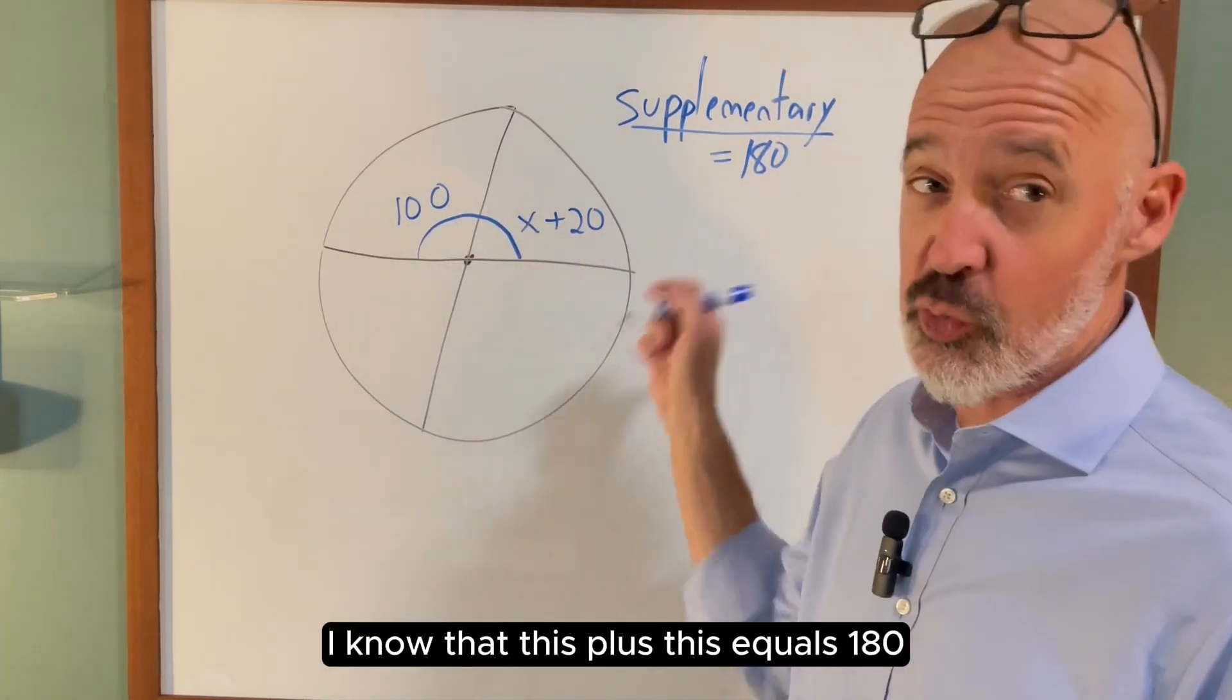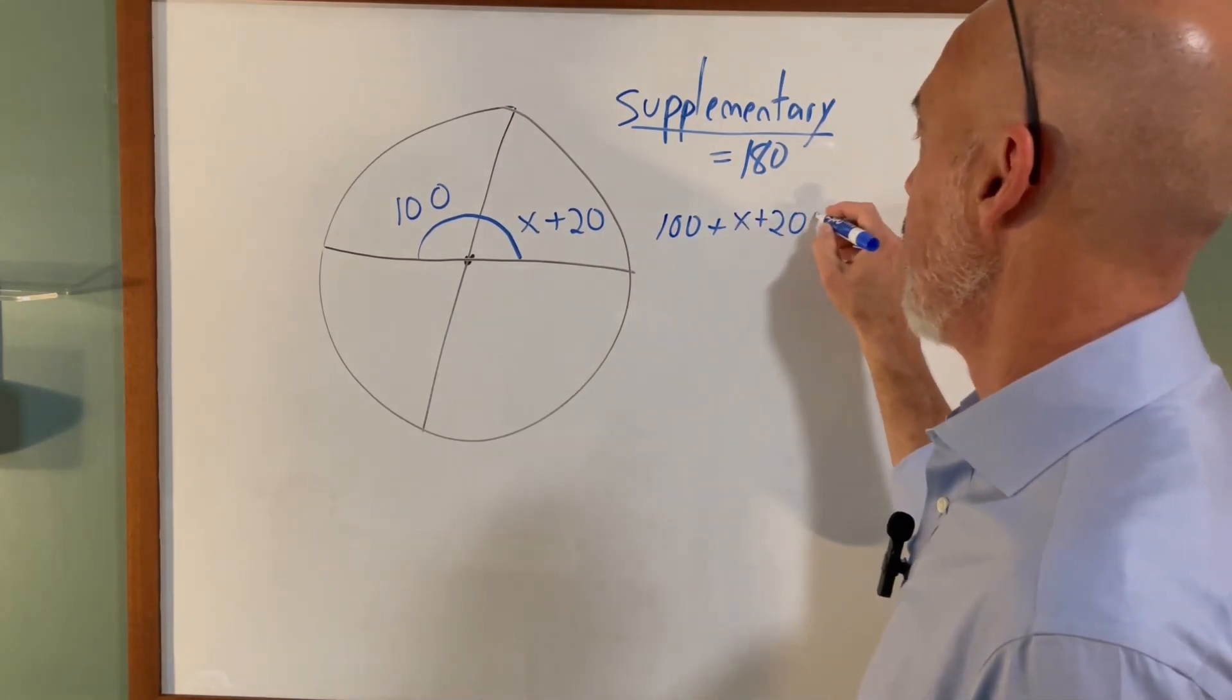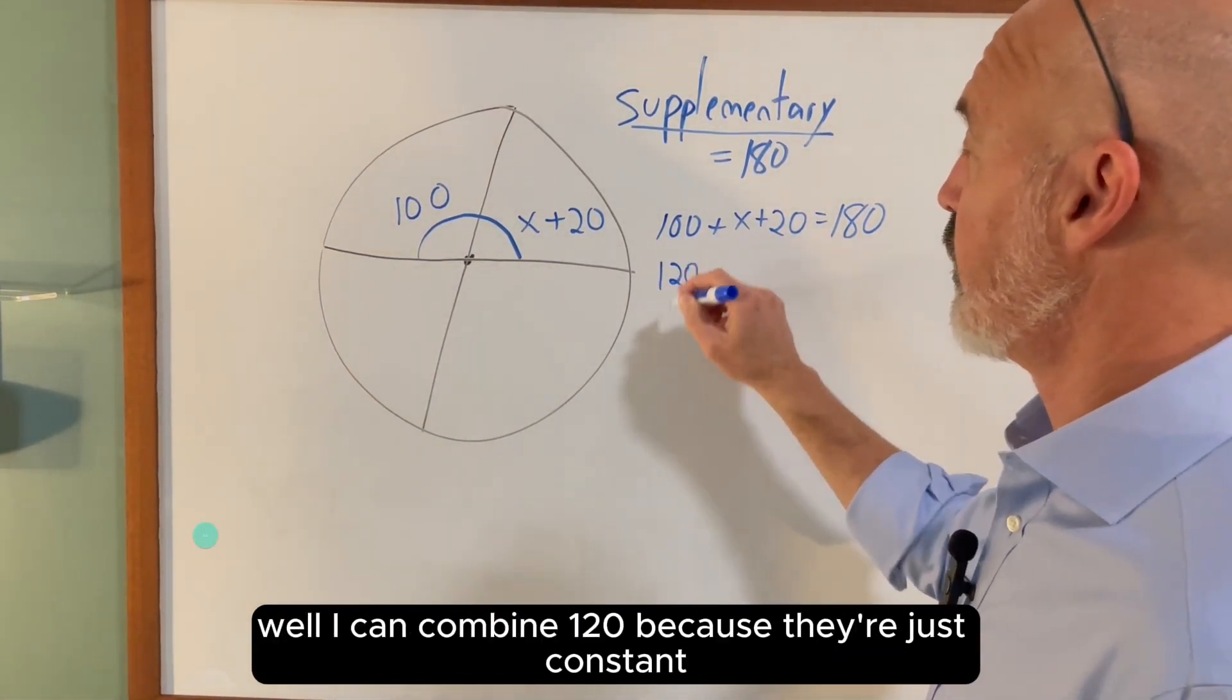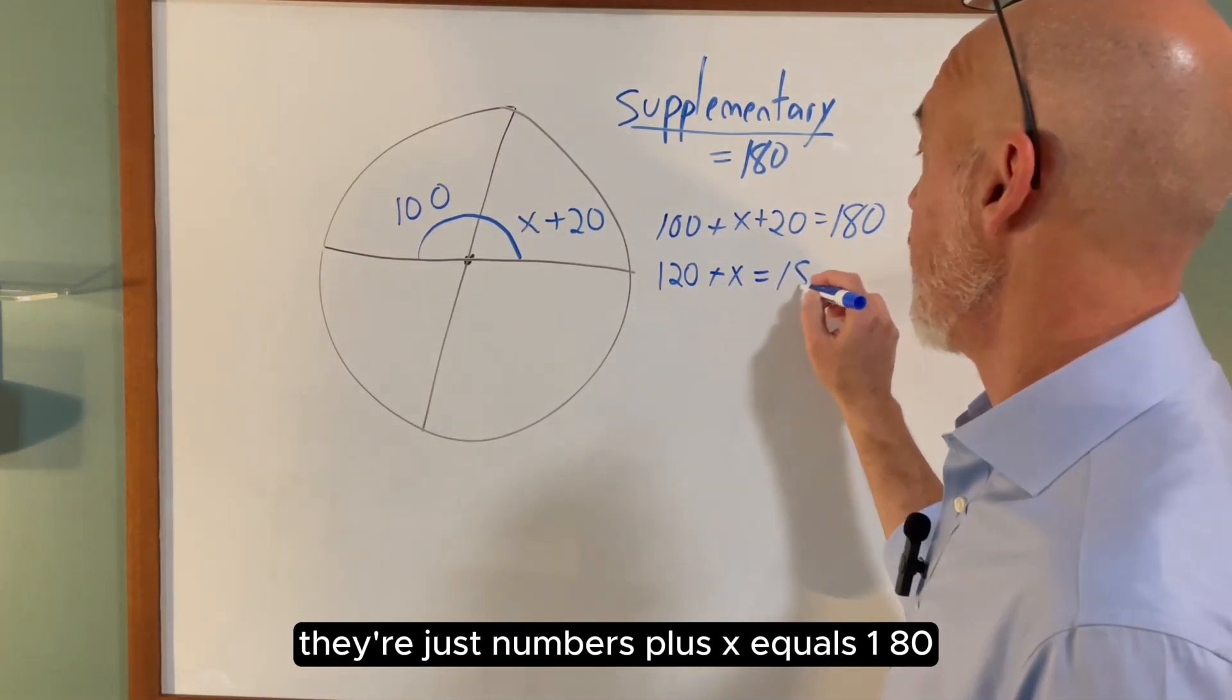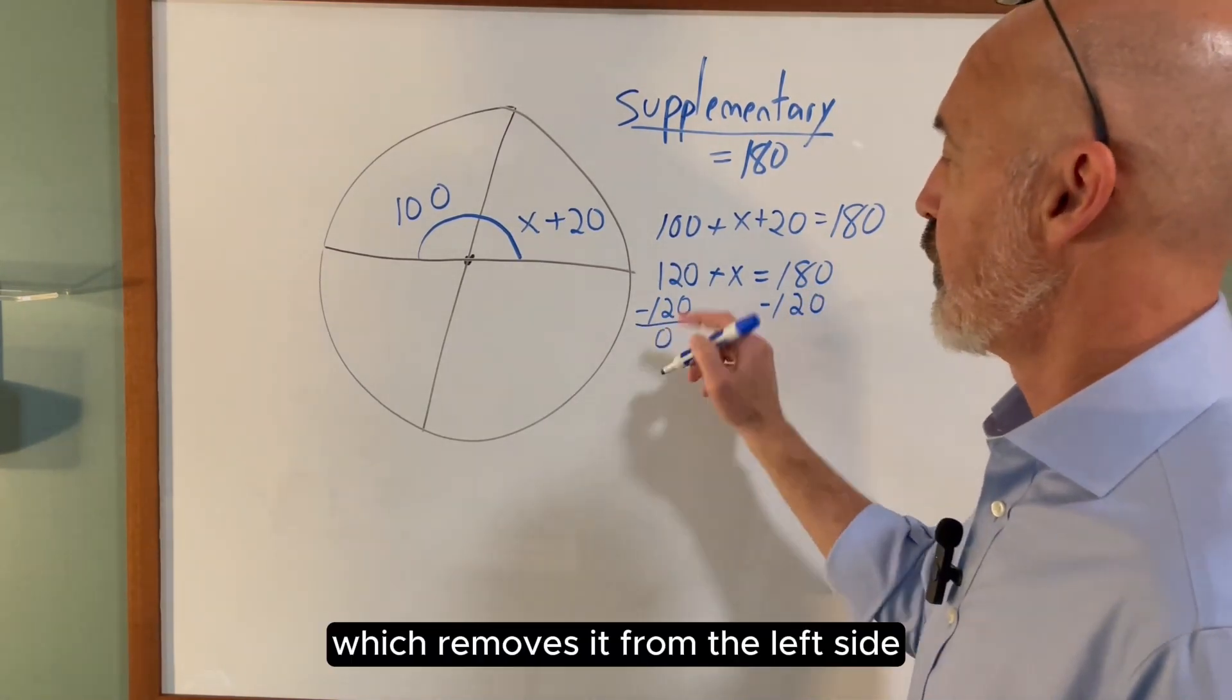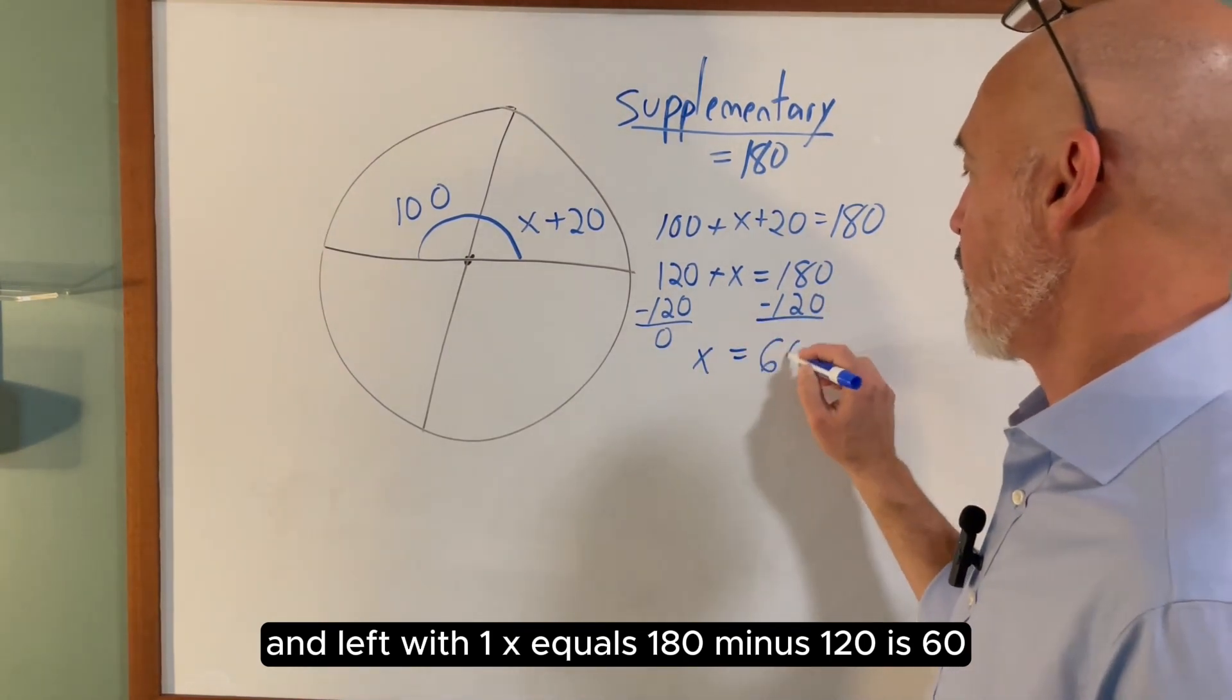I know that this plus this equals 180, so 100 plus x plus 20 equals 180. Now how do I solve this? Well, I can combine 120 because they're just constants, they're just numbers, plus x equals 180. Then I can subtract the same thing from both sides, 120, which removes it from the left side, and I'm left with 1x equals 180 minus 120, which is 60.